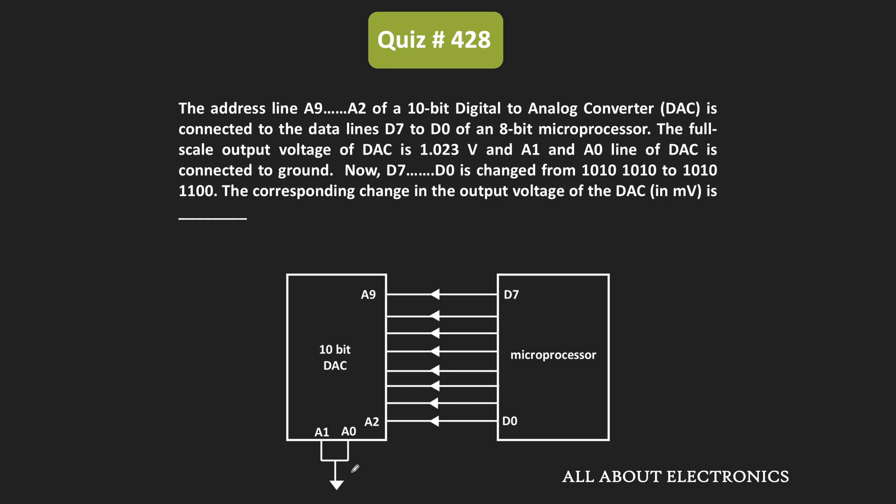The remaining 2 input lines of the DAC are connected to the ground terminal. On these data lines, 2 sets of different data are given to the DAC. We have been asked to find the change in the output voltage which is observed at the DAC.